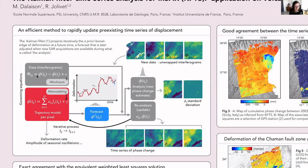It means that we solve for two equations. At the top you have the definition of an interferogram, where you have some error that comes mainly from processing. At the bottom you have a functional description of deformation that corresponds to this red line, and we adjust for the coefficients a_n, which are multiplicative coefficients of a linear combination of functions f_n that are functions of time. There is also an error in the modeling of the phase change called mismodeling, which accounts for temporally uncorrelated noise of the time series, mainly coming from atmospheric delays.